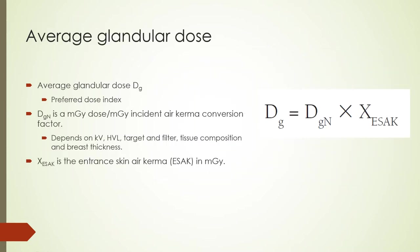Because mammography uses ionizing radiation, the risk of carcinogenesis from radiation dose to the breast is a concern, especially for screening mammography given the large number of women receiving exams. Optimization of breast dose is important and monitored yearly per MQSA regulations. The average glandular dose, D subscript G, is the preferred dose index because glandular tissue is often the site of carcinogenesis. The formula uses X-ESAC (entrance skin air kerma in milligray) and D subscript Gn, a conversion factor depending on kV and HVL of the machine.